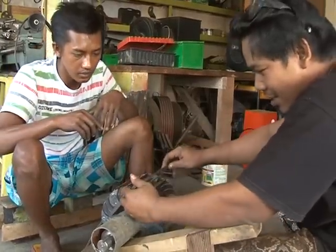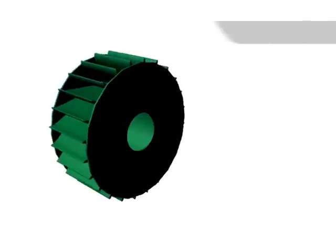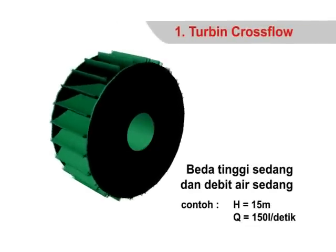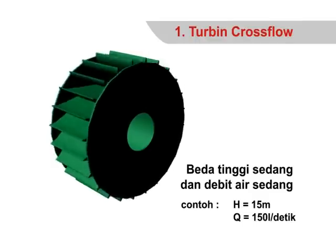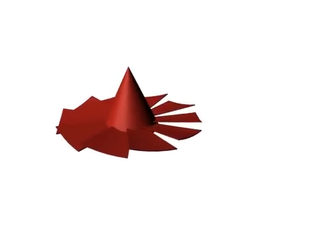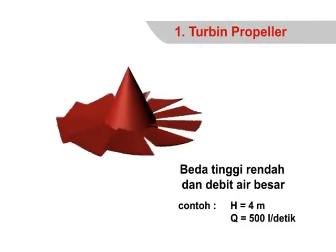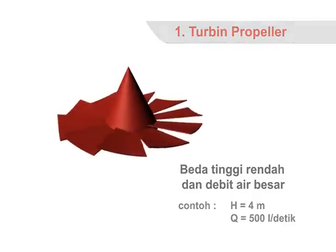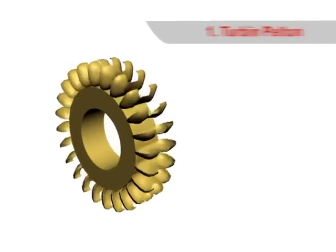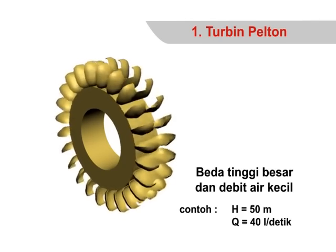The most commonly used turbine in rural Indonesia is the cross flow turbine, which operates well with moderate head of about 15 meters and flow requirements of about 150 liters per second. Other types of turbine are propeller and pelton. A propeller turbine is good for low head of approximately 4 meters and a high water flow of 500 liters per second. The pelton model is used for high head of around 50 meters and low water flow of about 40 liters per second.